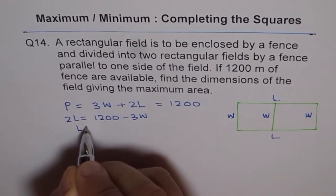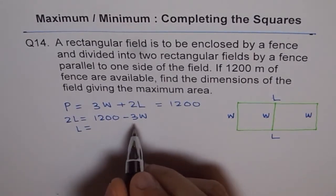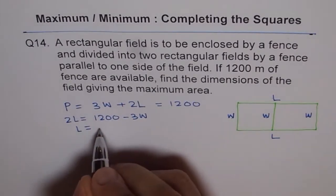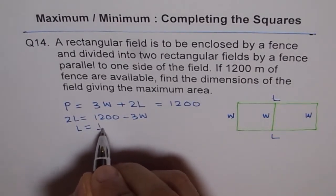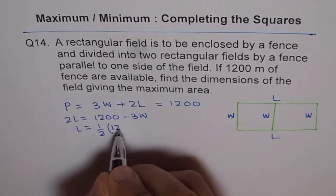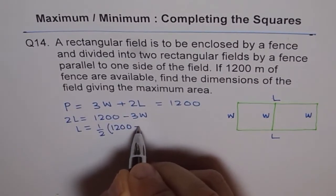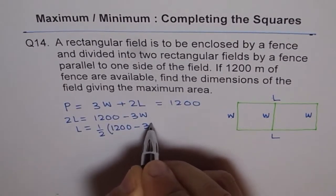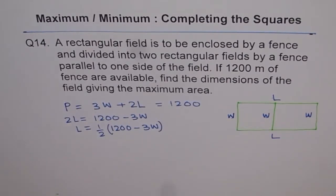Then we have twice L equals 1200 minus 3W, or length equals, we'll divide both by 2, right? So we have half of 1200 minus 3W, correct? So that is the length for us.